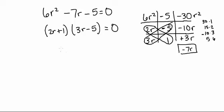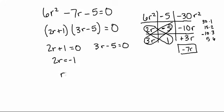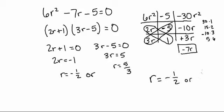Since we want to solve, we set each factor equal to 0: 2r plus 1 equals 0, and 3r minus 5 equals 0. We do this because any time two things are multiplied together, if one of them equals 0 the entire product equals 0 — that's the zero product property. Solving the first: 2r equals negative 1, so r equals negative one-half. Solving the second: 3r equals 5, so r equals 5 over 3. Therefore r equals negative one-half or 5 over 3.